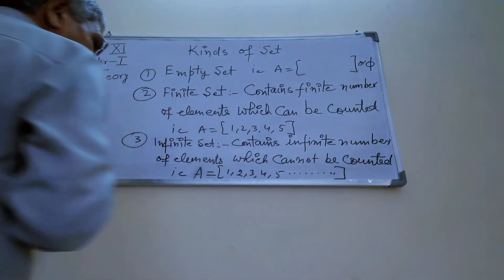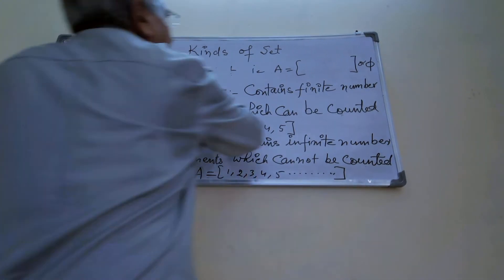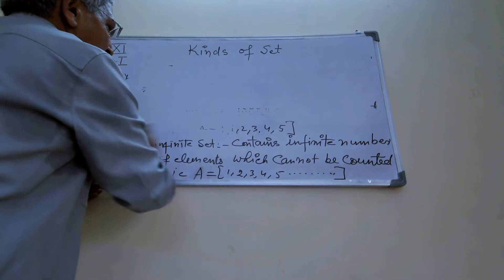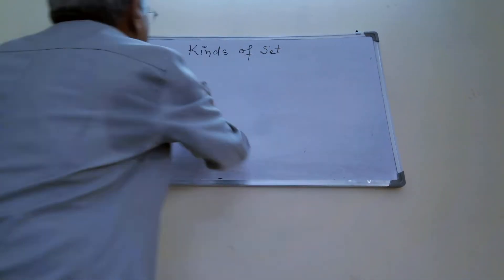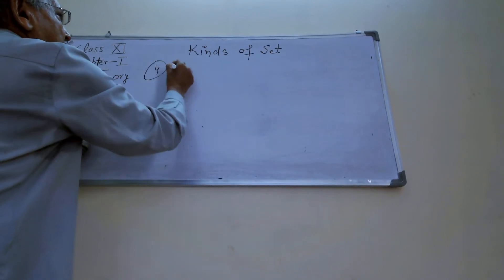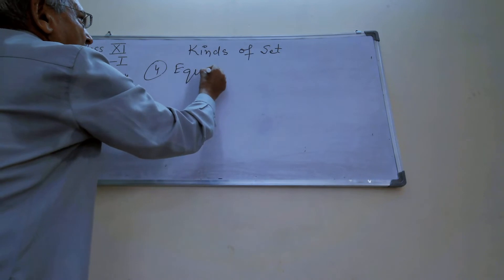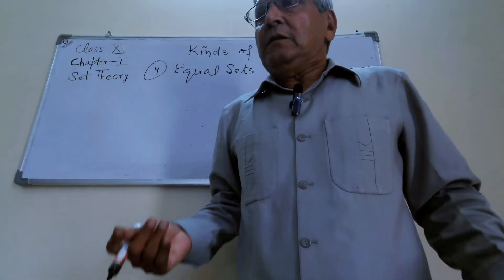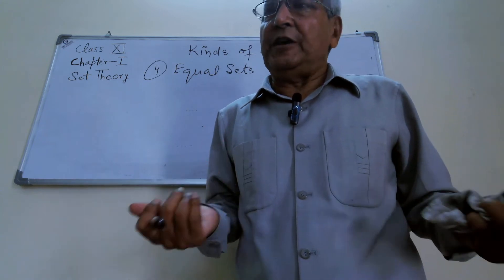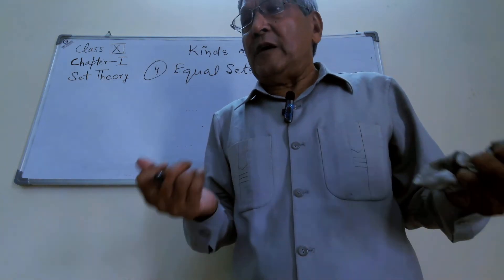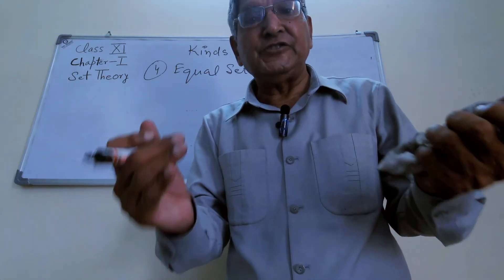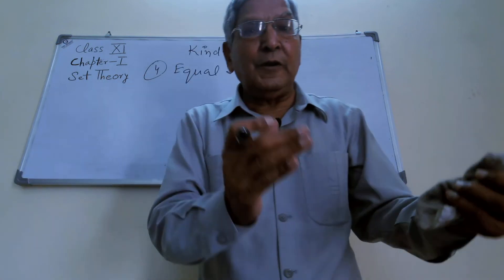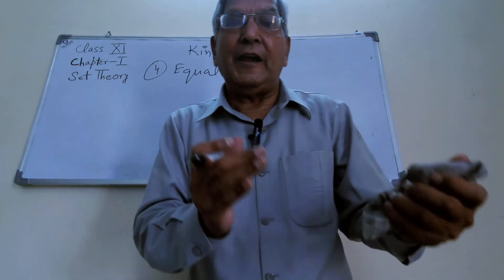Now I am taking the fourth kind: equal sets. In equal sets, the elements should be examined carefully. If every element of A is an element of B, and every element of B is an element of A, then A and B are both equal sets.